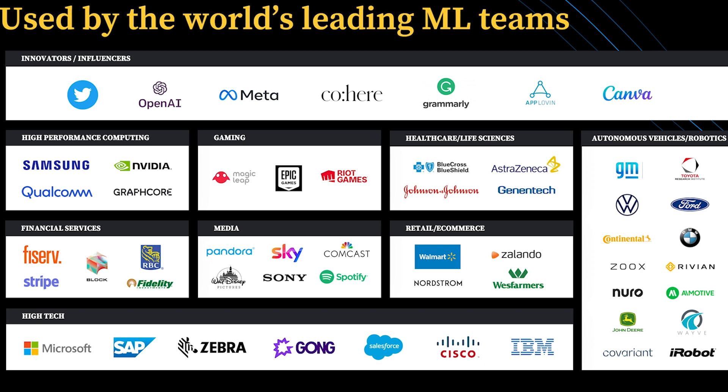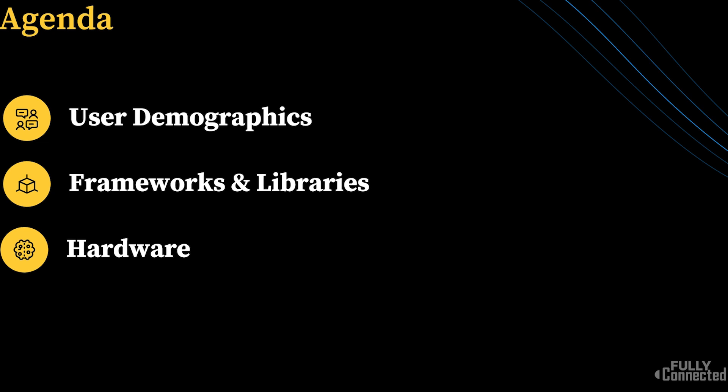Aside from a bit of a humblebrag with that slide, it hopefully goes to show that the data we'll present is representative of the universe of research being performed in ML, both in academia and in the corporate setting across a broad base of research parameters, industries, and use cases. We'll cover three topics: user demographics, the frameworks and libraries that we see these users using in Weights and Biases, and then hardware — predominantly GPUs in this analysis.